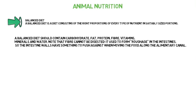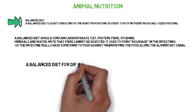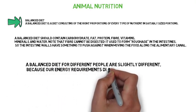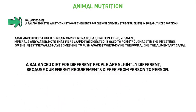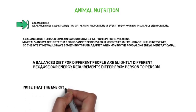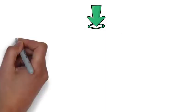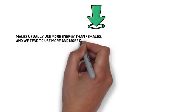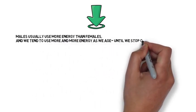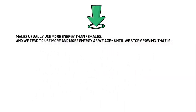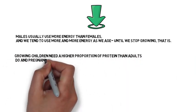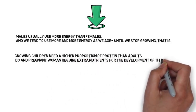A balanced diet for different people is slightly different because our energy requirements differ from person to person. The energy needed is provided by our carbohydrate and fat intake. Males usually need more energy than females, and we tend to use more energy as we age until we stop growing. Growing children need a higher proportion of protein than adults, and pregnant women require extra nutrients for the development of the fetus.